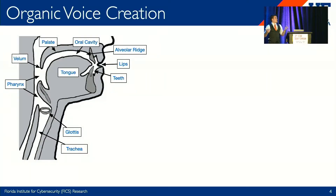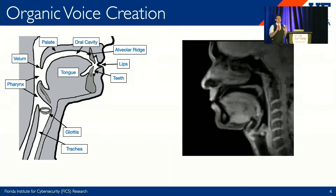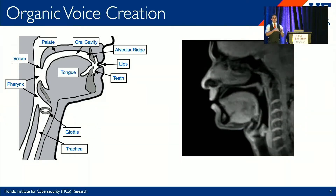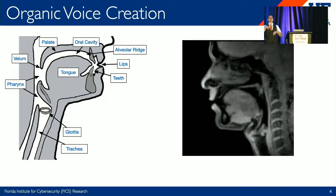Before we go further, let me give you some background on how humans and deepfakes actually generate audio. Human beings create our voices using our vocal tracts — a series of anatomical structures like your tongue, lips, cheeks, nasal cavity, oral cavity, etc. We take these pieces of anatomy and move them into configurations that produce certain sounds. By combining different arrangements, we can form longer pieces of audio — things like words, sentences, and eventually entire languages.